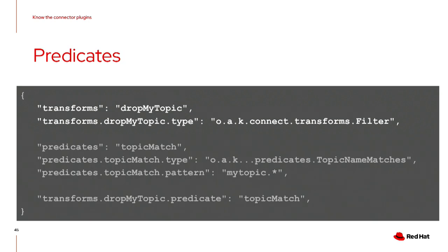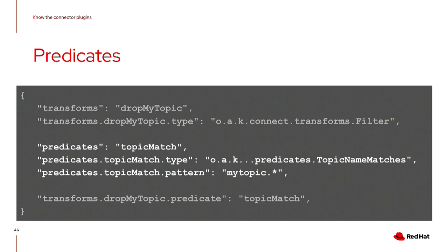The final connector plug-in works in tandem with transformations: predicates. A predicate determines whether a transformation should be applied. Some transformations always make sense to use with a predicate — for example, the filter transformation without a predicate will remove every single record it sees. You configure a predicate with an alias, a type such as TopicNameMatches, and a pattern — for example, a wildcard to match 'my-topic.*'. If the predicate returns true for a record, the linked transform is applied.